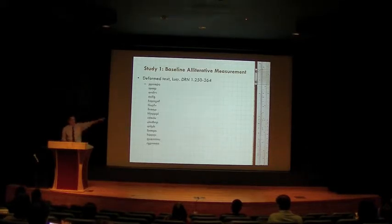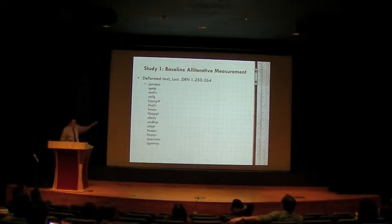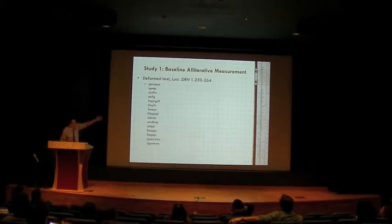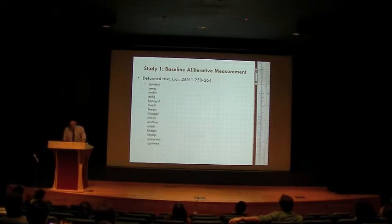Here's your new Lucretius — Lucretius has data, get used to it. This shows just the initial onsets. I chose these 14 or 15 lines because Palmer says they are a good example of extended alliteration in Lucretius.